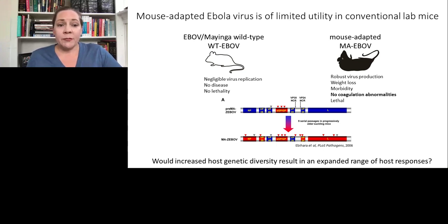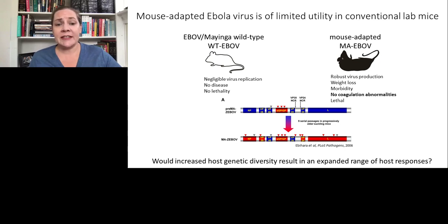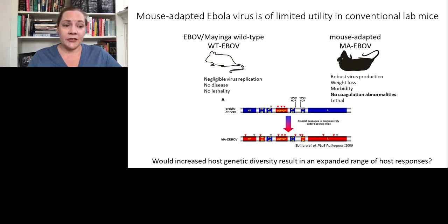When you infect lab mice with wild-type Ebola — in this case the Mayinga strain, which is the prototypic strain of Ebola — there is some virus replication, but it doesn't cause disease and it doesn't kill the animals. When you use the mouse-adapted virus, it does kill the animals; however, the disease is not very similar to what you see in human Ebola virus disease. So we wanted to know if increased host genetic diversity would result in an expanded range of these host responses and allow us to better model this disease and its pathogenesis.